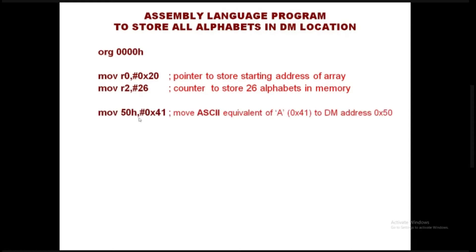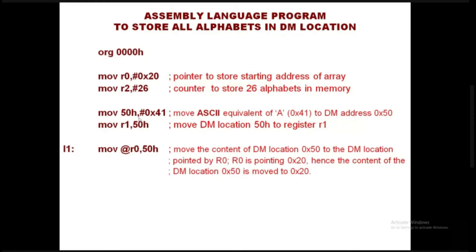We move the ASCII equivalent of capital A, which is 0x41, immediately to data memory location 50. Then this data memory location 50 is moved to register R1. Through indirect addressing, we use MOV instructions for data transfer. The content of data memory location 50 is 41, which is the hexadecimal equivalent of capital A.